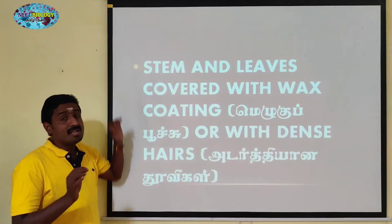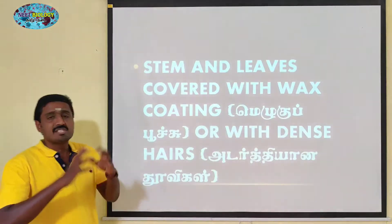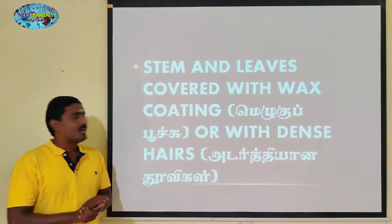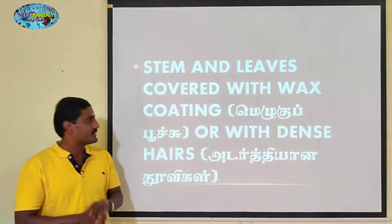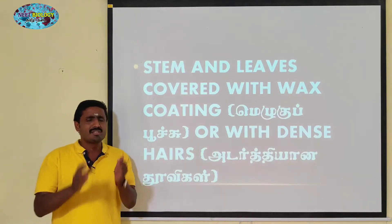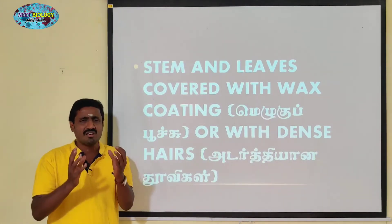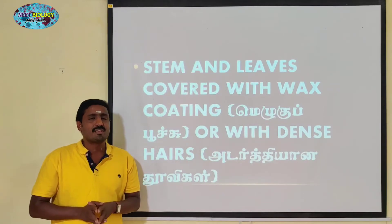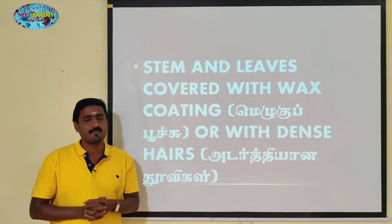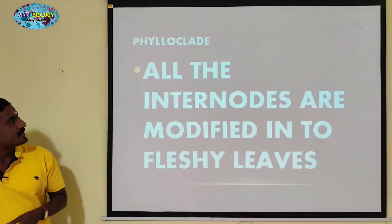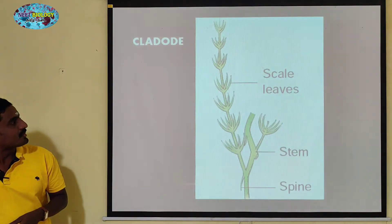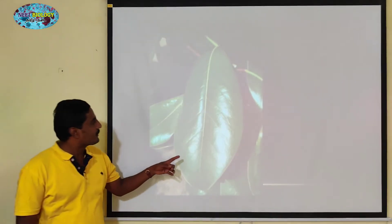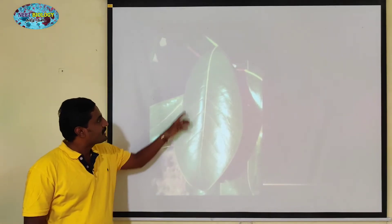The stem and leaf has a cover of wax. Wax is one of the key features of these plants. The stem is very hard, and the leaves are also very hard. If you have a diagram of leaf adaptation, the picture is useful.